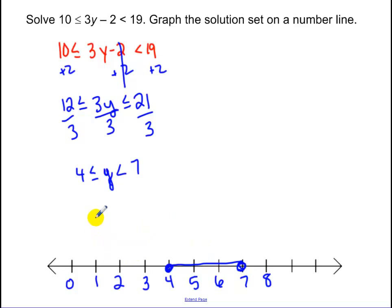So from 4 filled in all the way to 7 with an empty hole at 7. And again, just so you guys realize, interval notation, you would include the 4. However, the 7 would not be included, so that would be in parentheses.